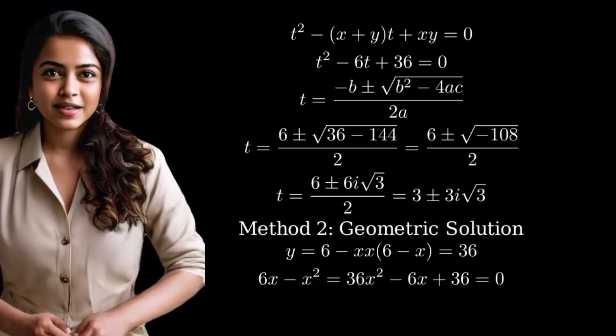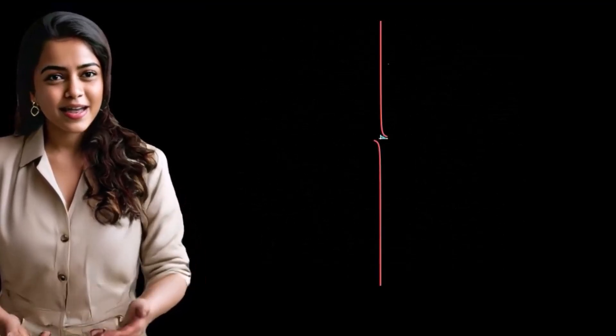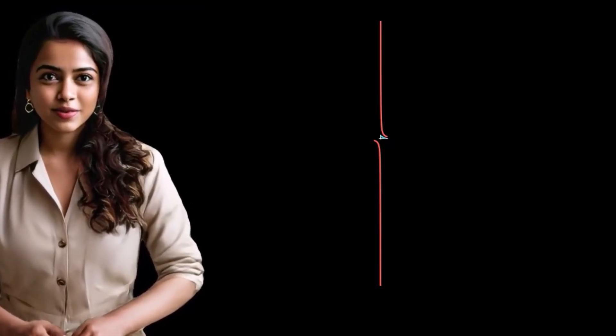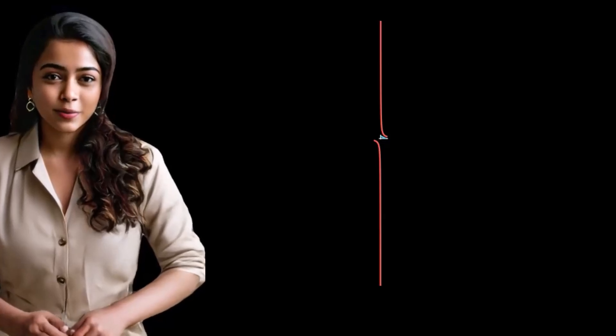Let's visualize this geometrically. We have a line x plus y equals 6 and a hyperbola xy equals 36. These curves don't intersect in the real plane, which explains why we got complex solutions.